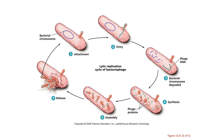Viruses are always very specific about the host cell that they use to produce progeny viruses in. In lytic viral replication, our bacteriophage is T4, it has DNA for its nucleic acid, and our host cell is E. coli strain B.